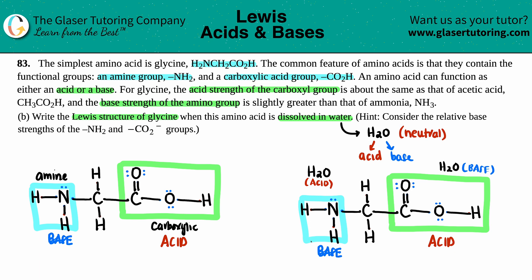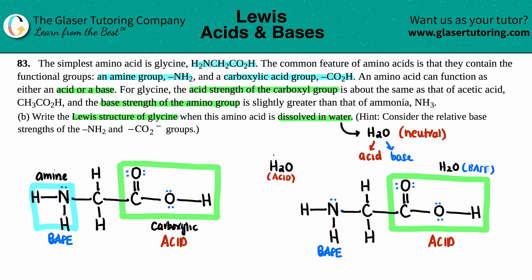What does a base do? In Brønsted-Lowry acid-base terms, bases always accept a hydrogen. So the amine is going to take a hydrogen from the water, and it can do that because it has two lone pairs — the lone pairs are what make the bond. Water has a hydrogen, the nitrogen has a lone pair, so the nitrogen takes it and makes a bond. Now you have one more hydrogen on the nitrogen, and since the nitrogen lost one electron it now has a positive charge.